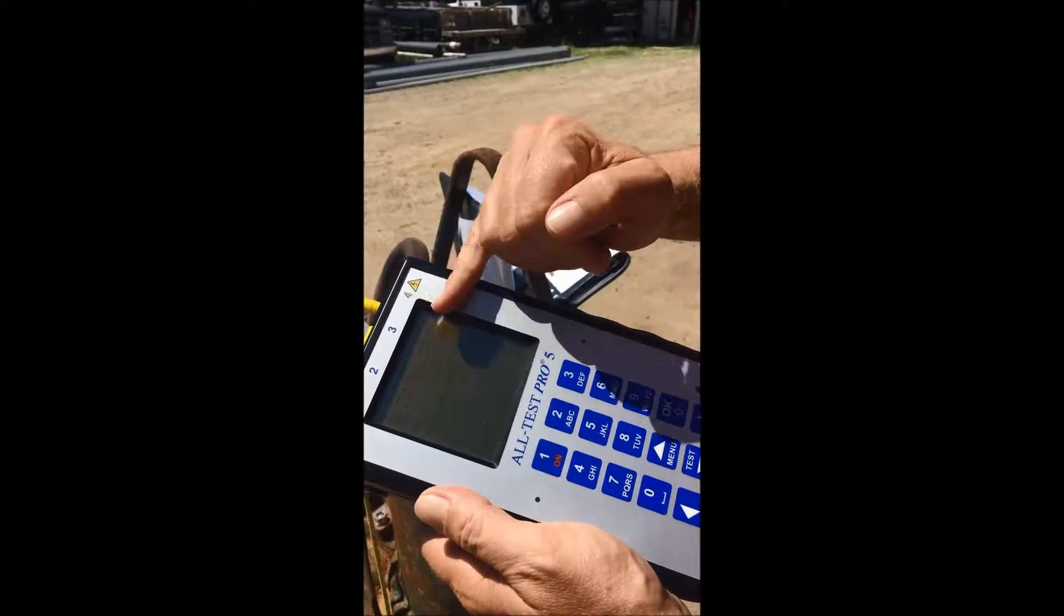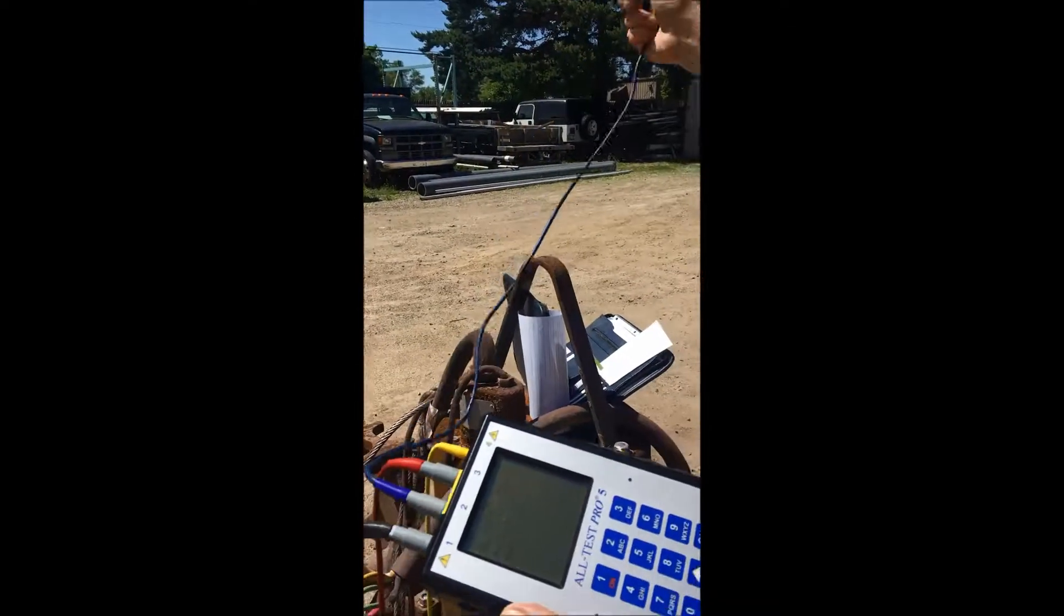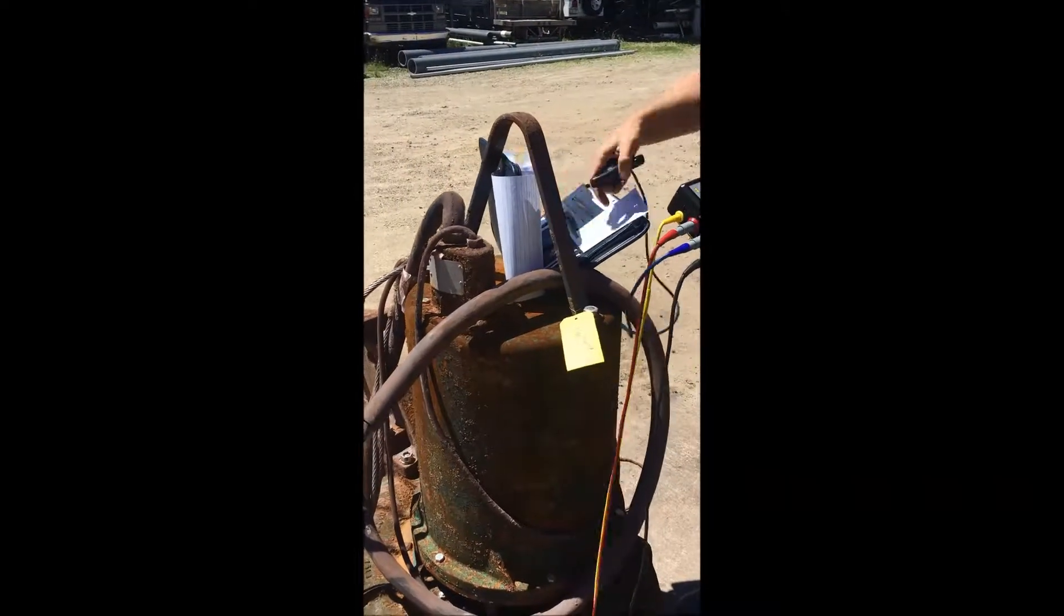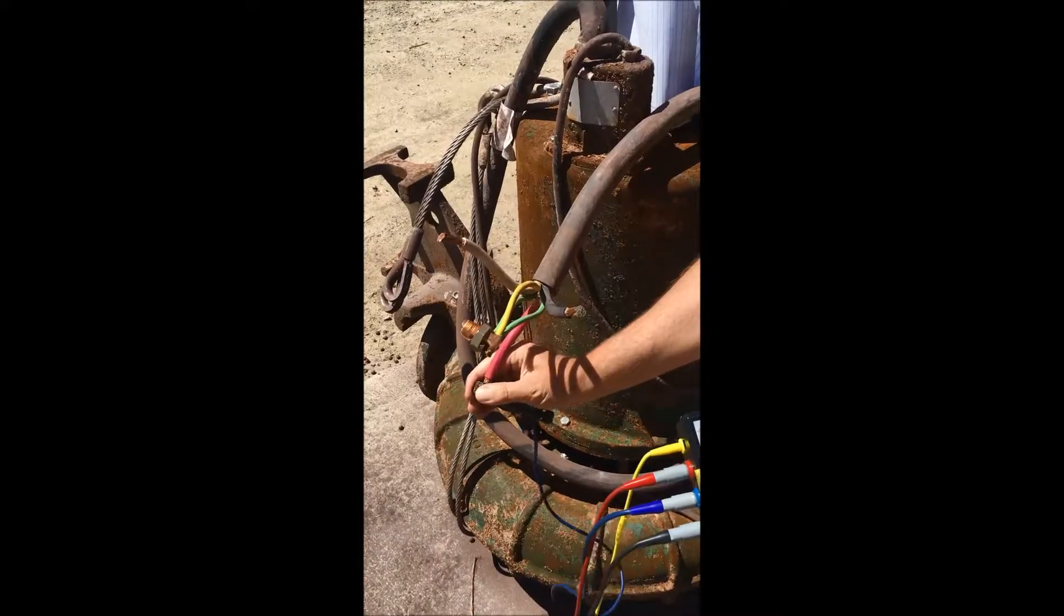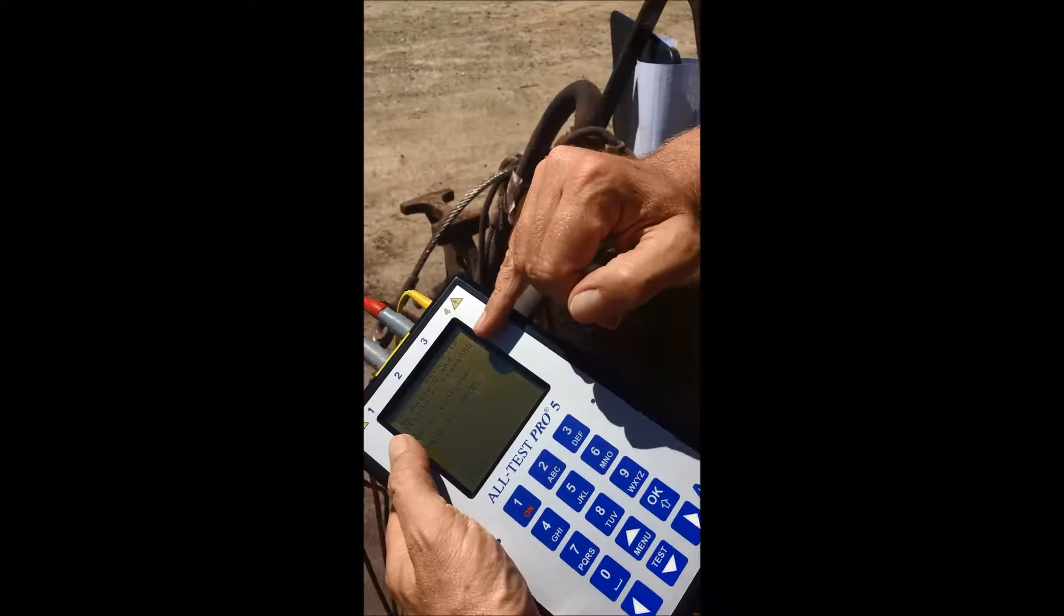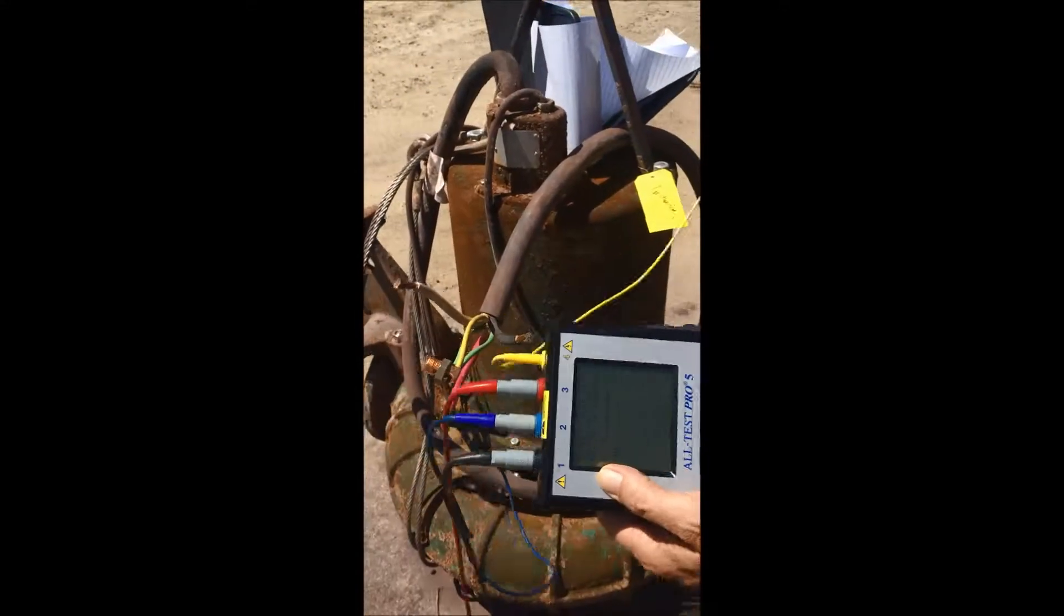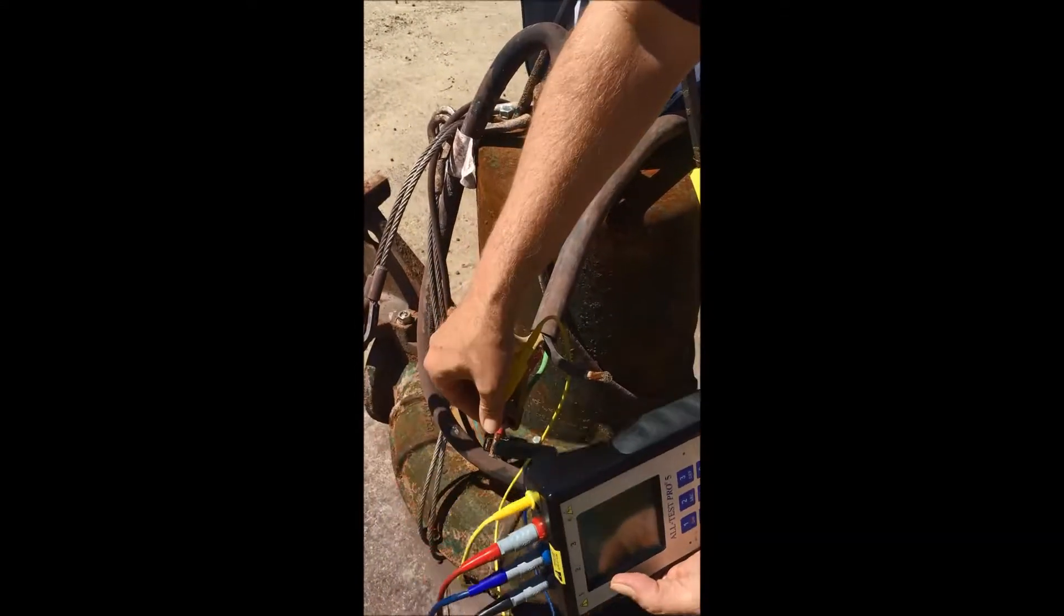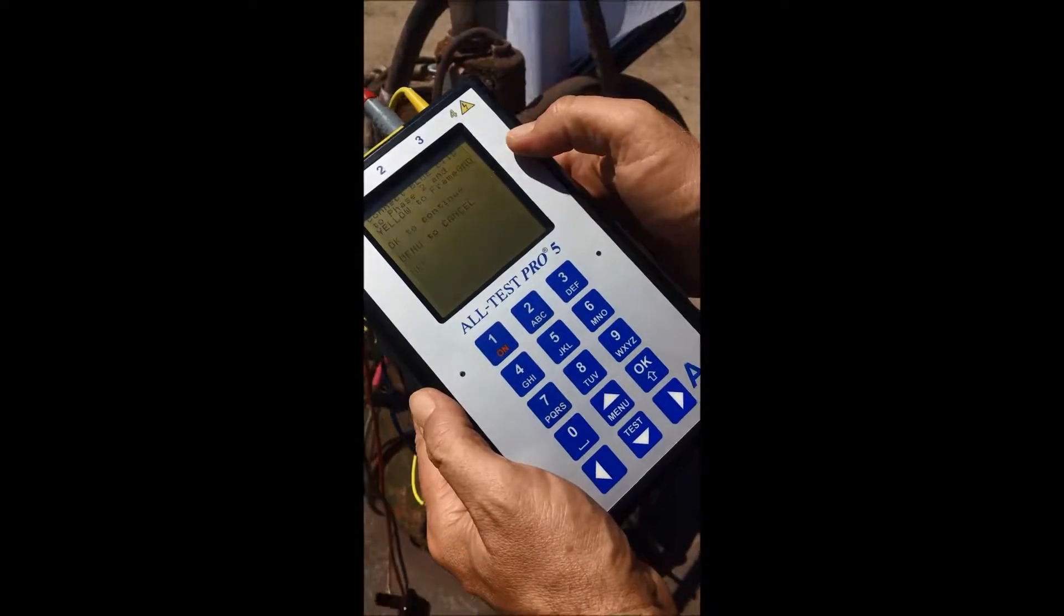It's telling us exactly what we need to do. I'm going to take our blue clip and connect it to phase two. We took a look at the wiring diagram. Phase two is our red lead. I'm going to connect blue to phase two and it tells us to connect yellow to ground or the frame. We have our ground leads all combined here. Make sure we have a good bite.